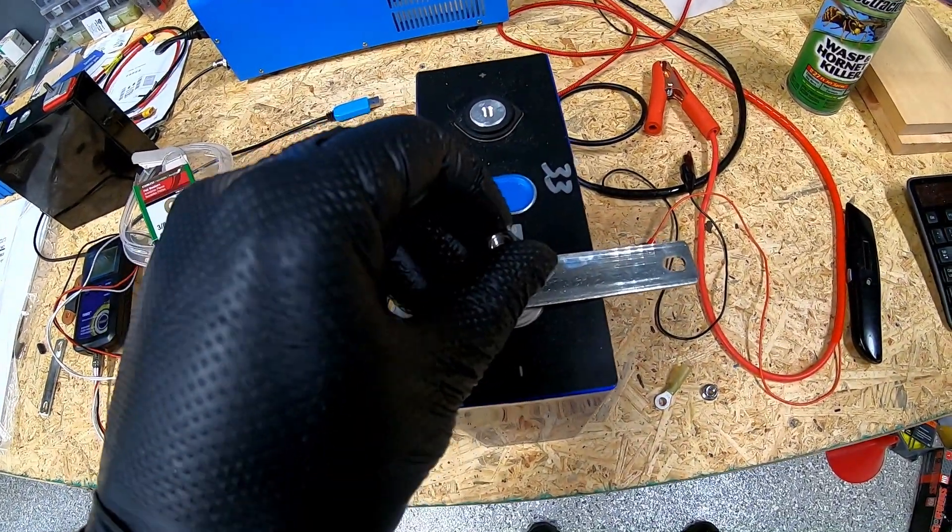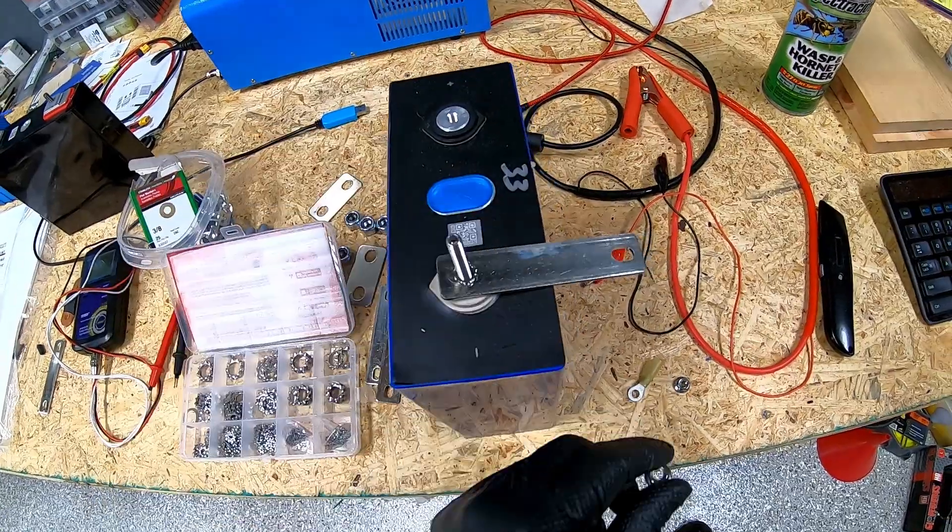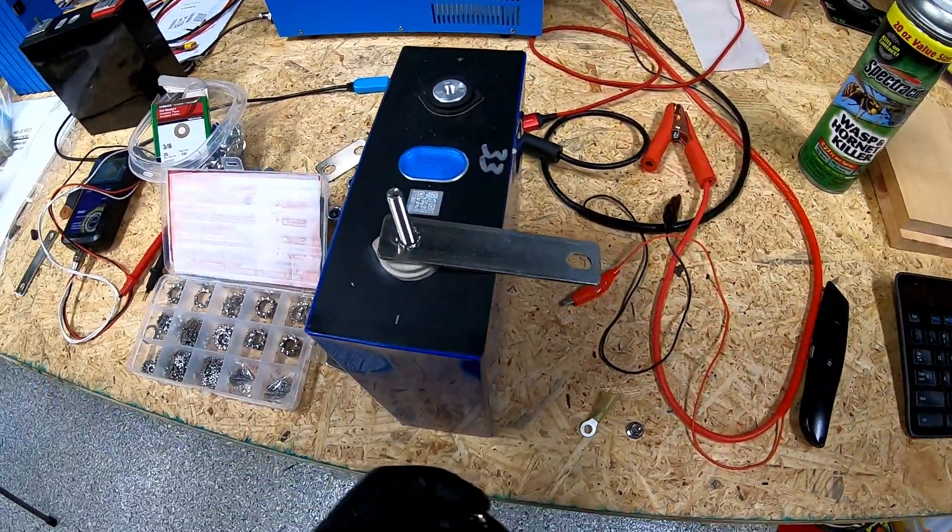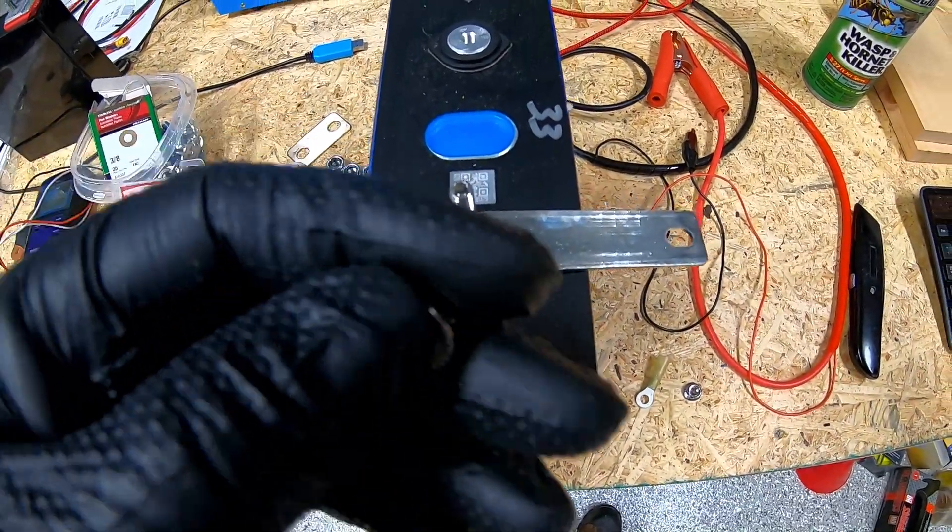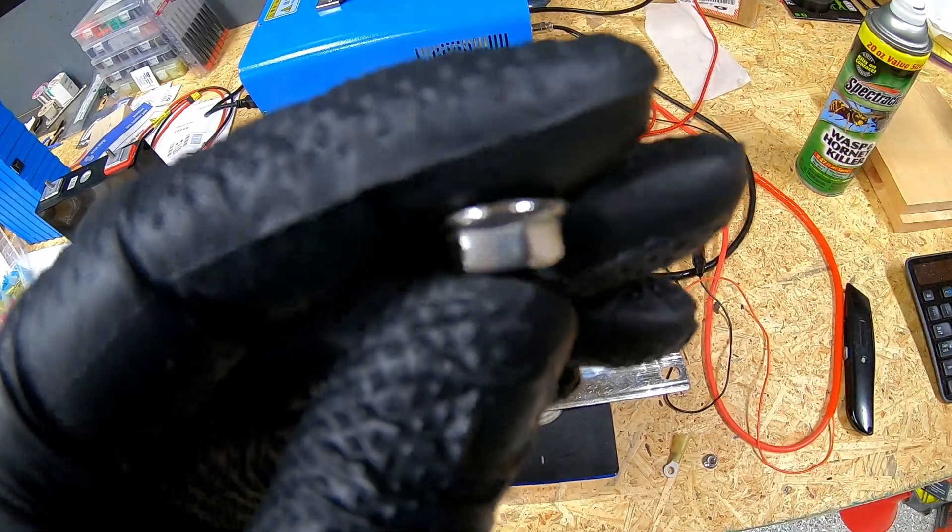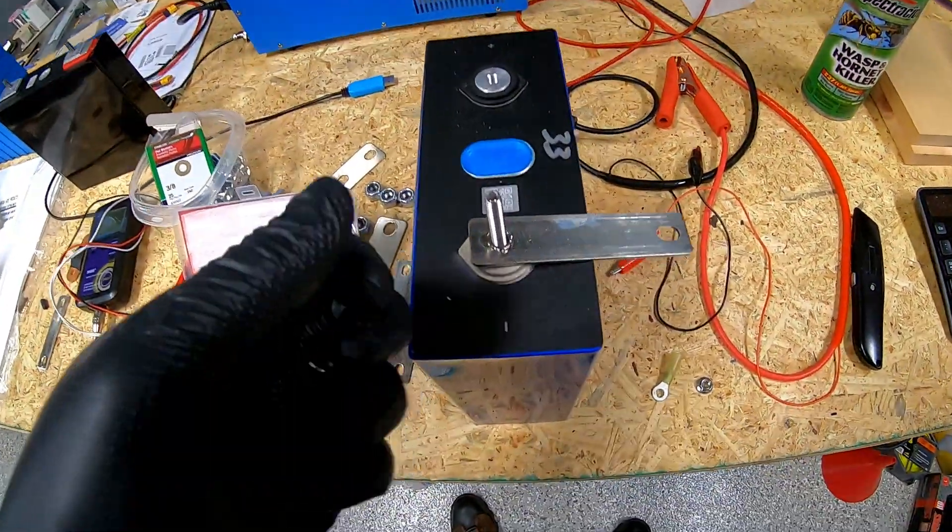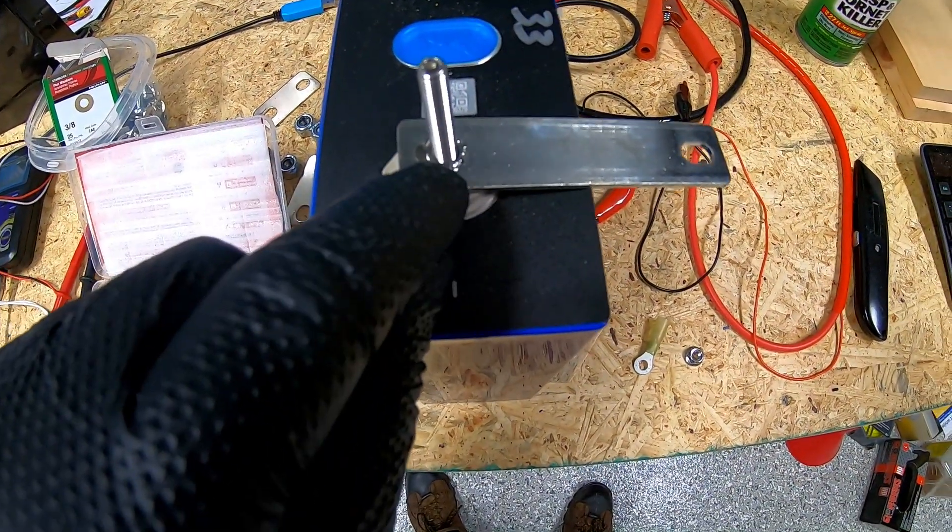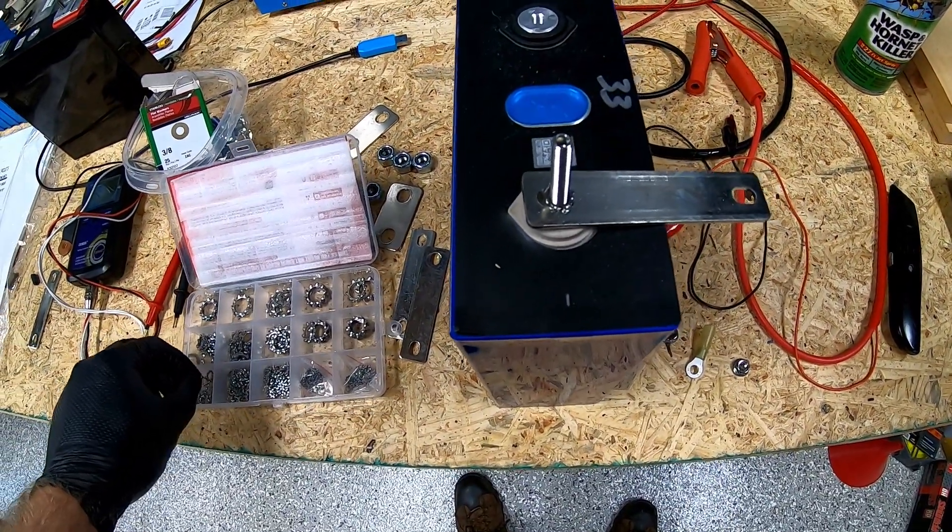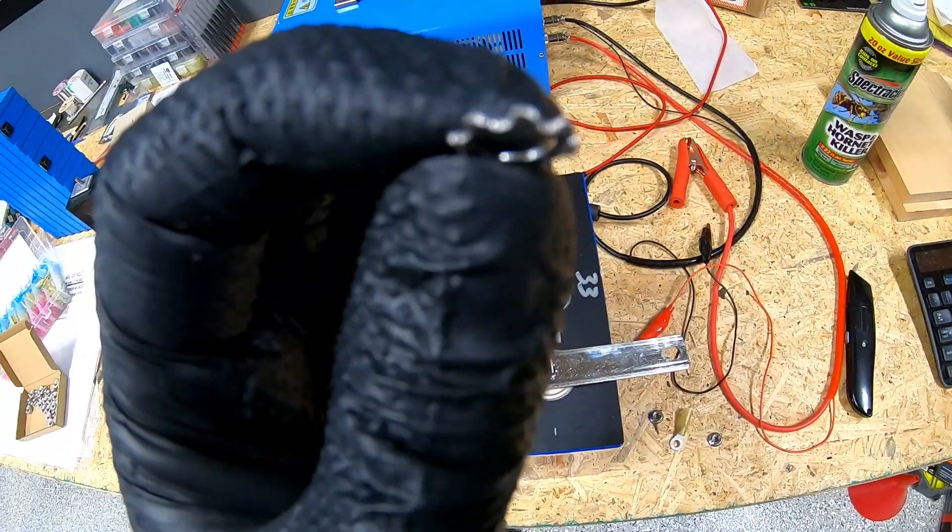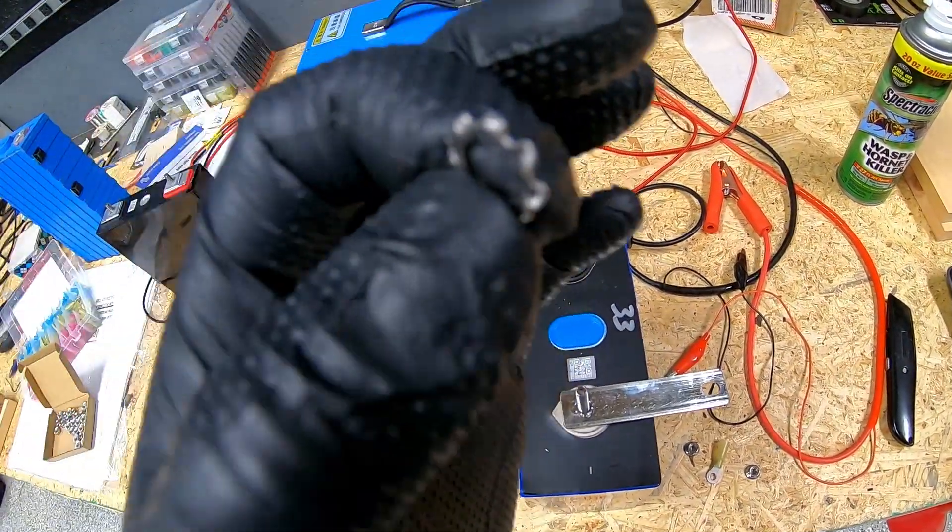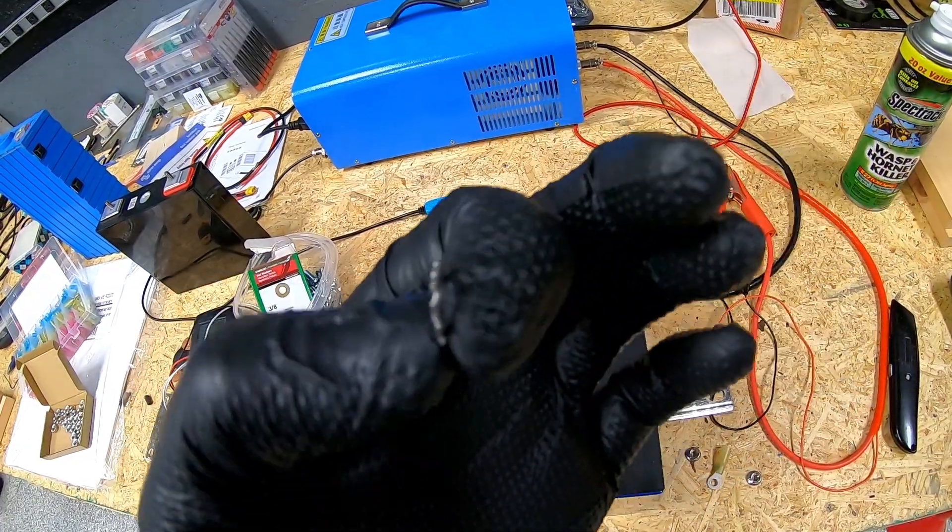Again, we've got our stud here, we've got our bus bar installed, we drop our tooth washer onto that, and then we drop our serrated flange nut onto that and tighten it up accordingly. It's going to feel a bit weird because you've got these rigid ridges on the serrated flange nut that kind of jump over the little grooves and the teeth as you tighten that bolt up. You'll feel it kind of bump around and click in place.